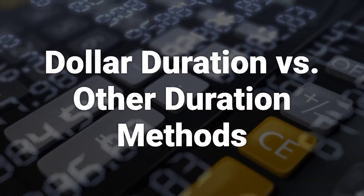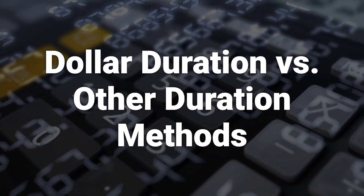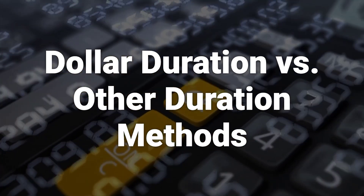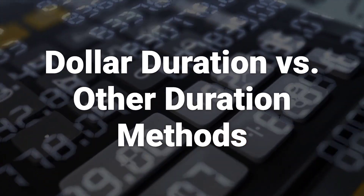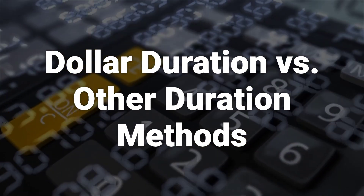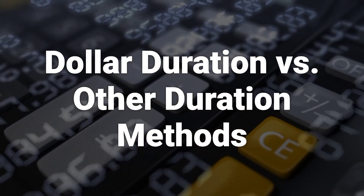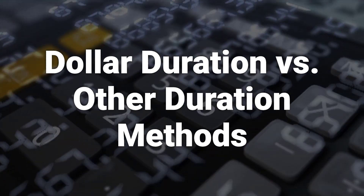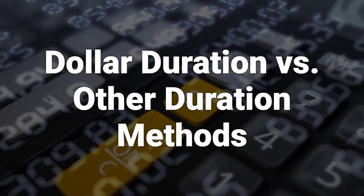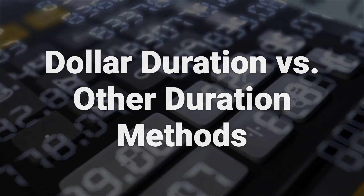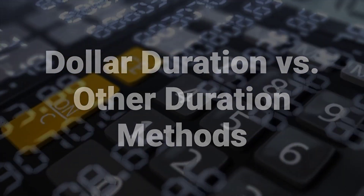Dollar duration differs from Macaulay duration and modified duration. Modified duration is a measure of price sensitivity to yield change, and Macaulay duration uses the coupon rate and yield to maturity to assess a bond's sensitivity. Whereas dollar duration provides a straightforward dollar amount computation with a 1% change in rates.